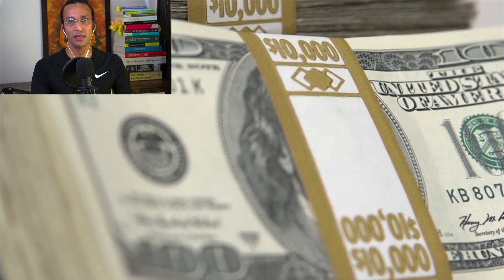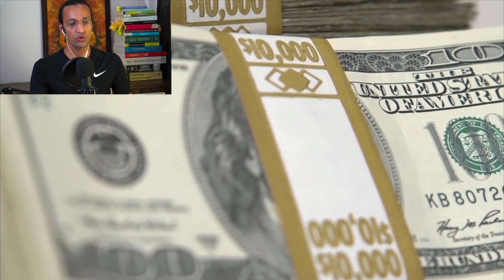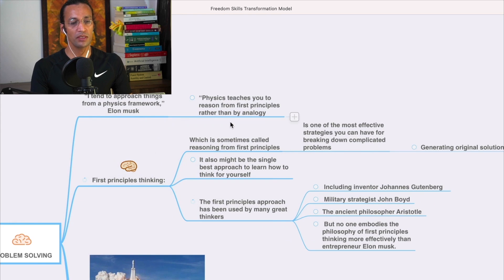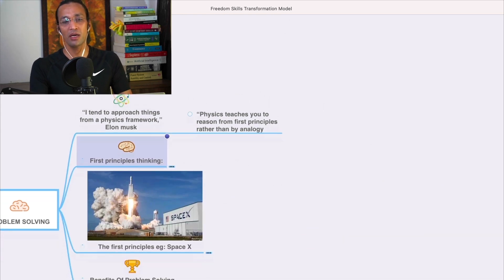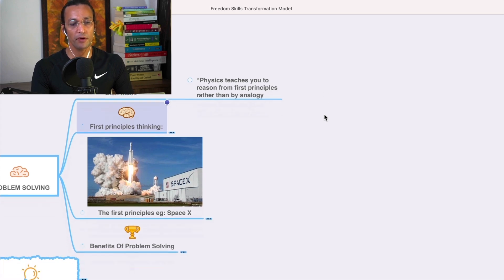Problem-solving skill is what Elon Musk learned from physics. It is called reasoning from the first principles rather than analogy.